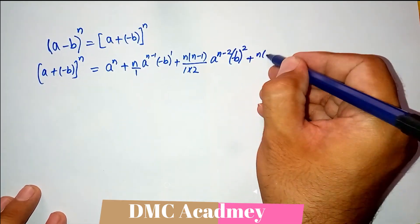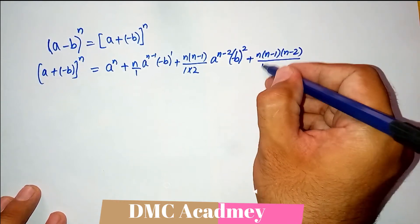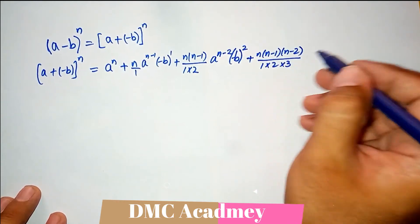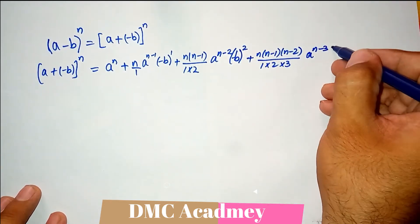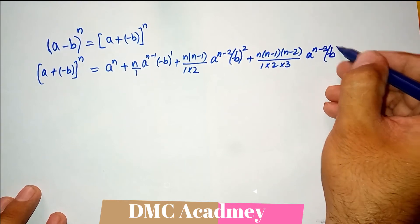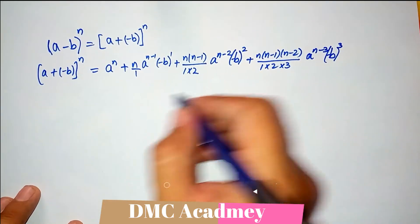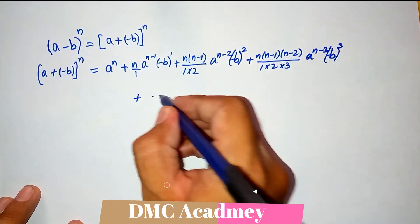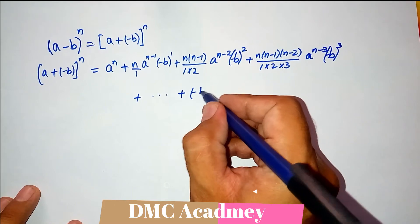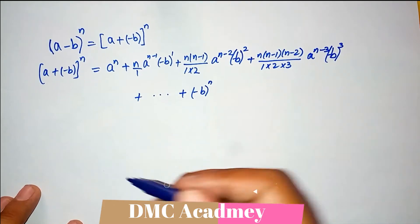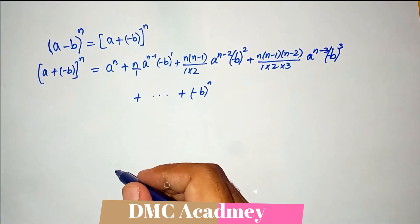Then plus n times n minus 1 times n minus 2, divided by 1 times 2 times 3, times a raised to power n minus 3, times minus b raised to power 3. And it continues until the last term, which is minus b whole raised to power n.